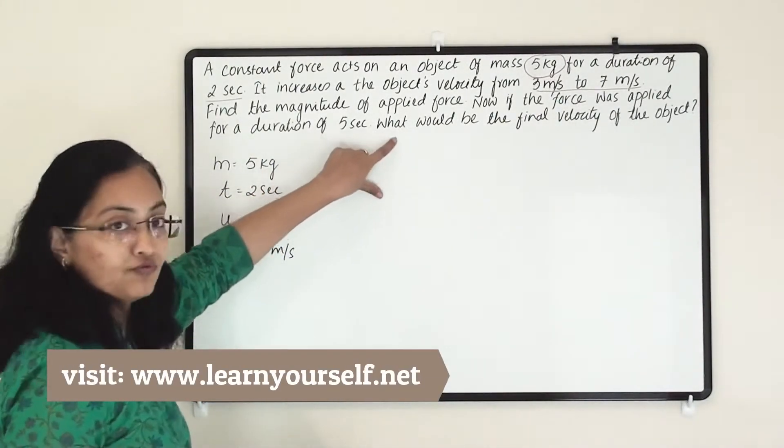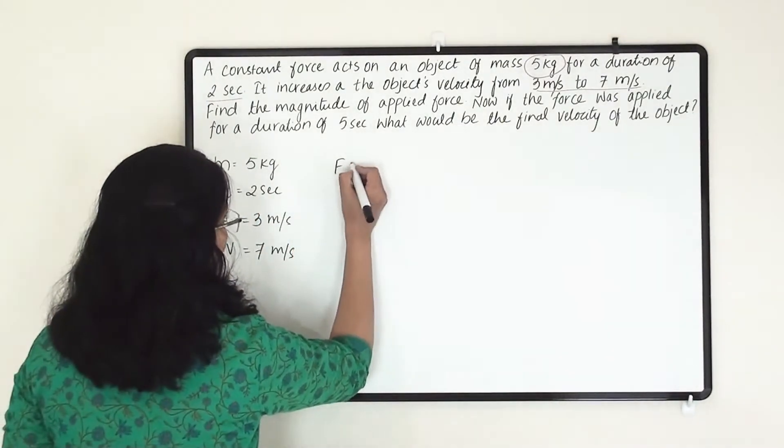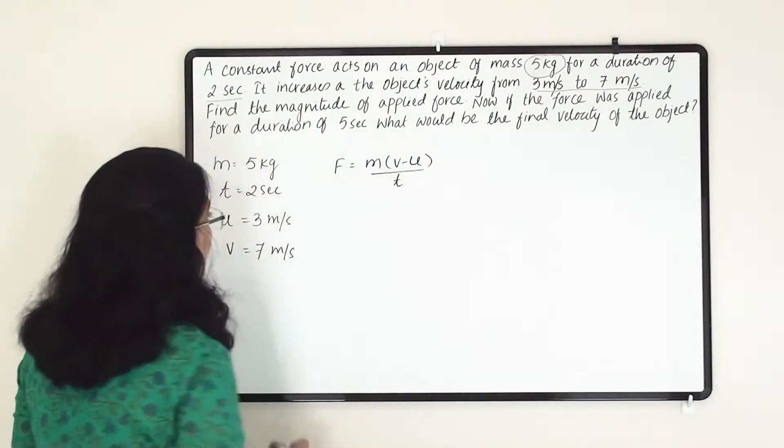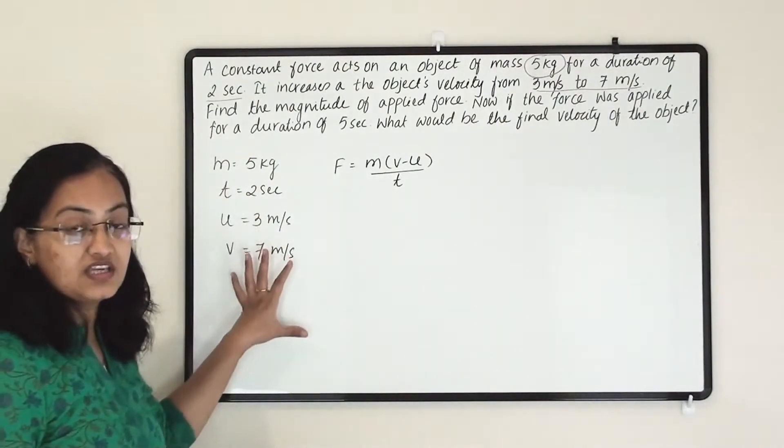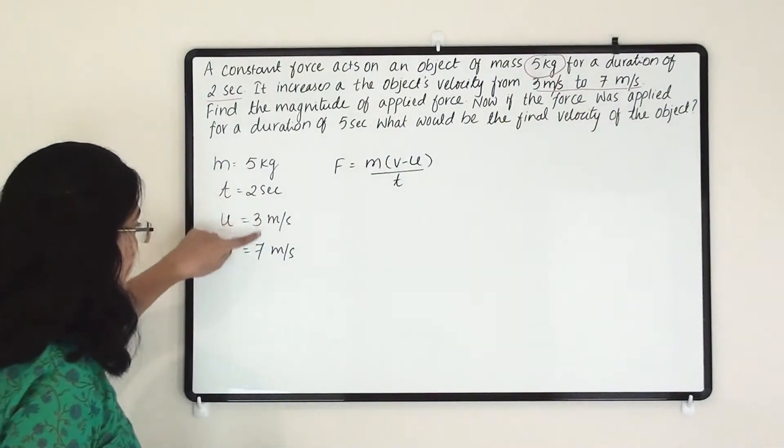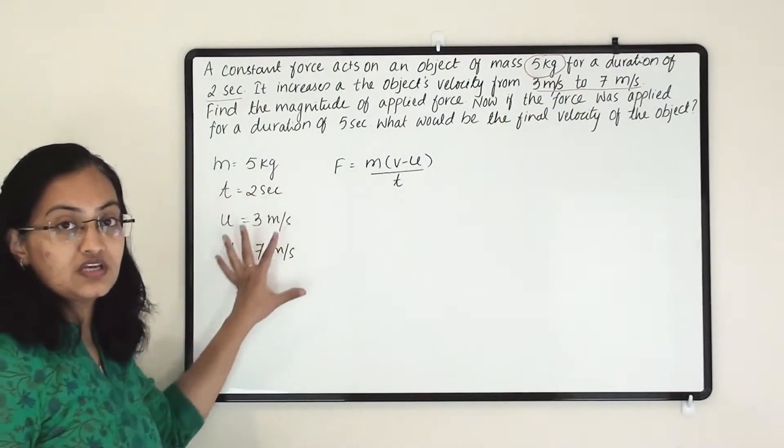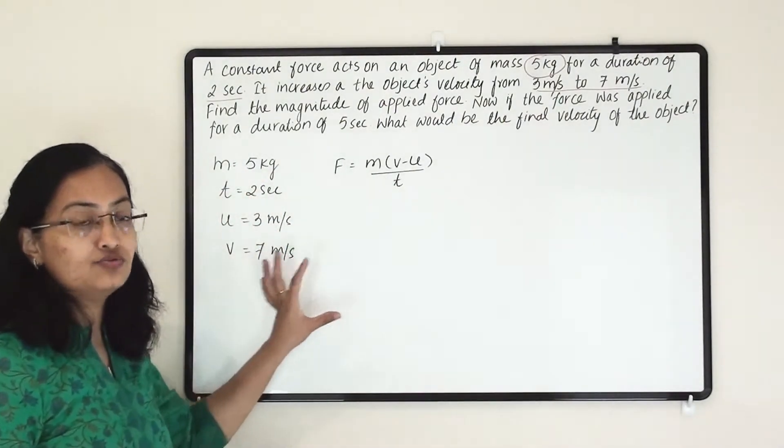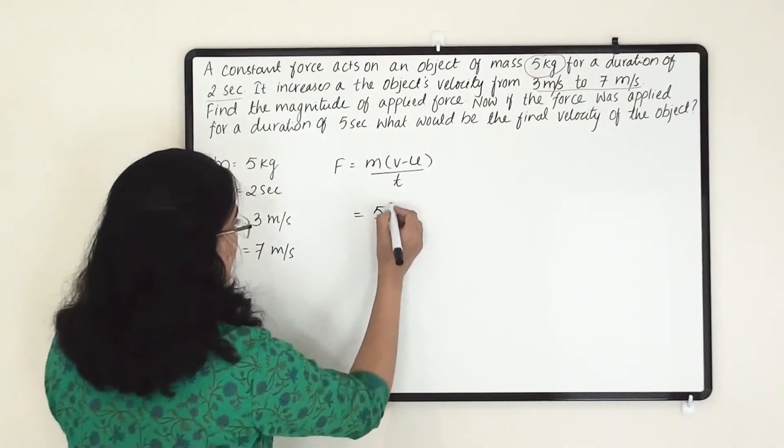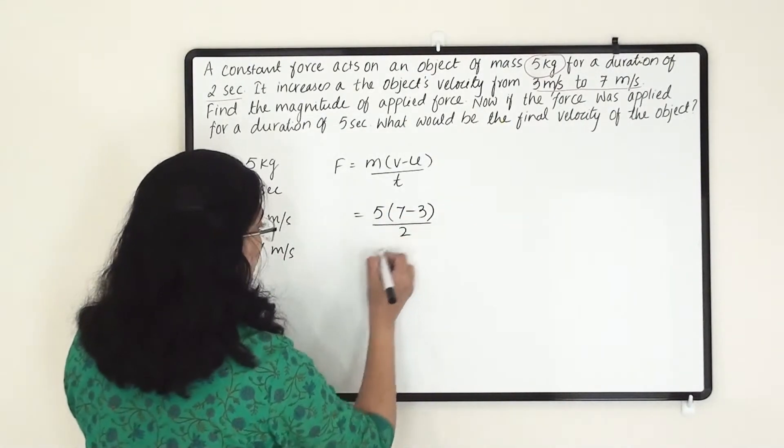So here F equals to m times v minus u divided by t. For that we have to check that all units they have given are proper or not. Mass is in kg, time is in seconds, velocity is in meter per second. So all the units are correct according to our formula. Here we are putting all the values, that is 7 minus 3 in division, 2 will be there.